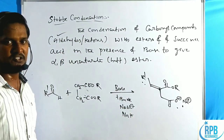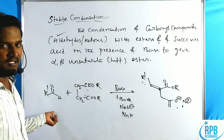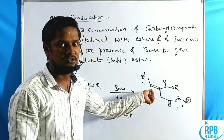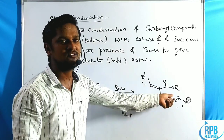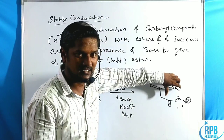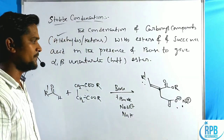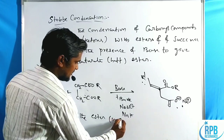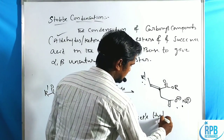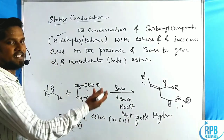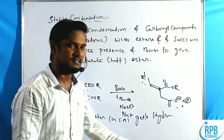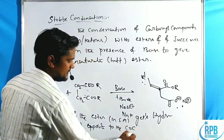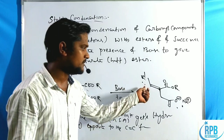This is the simplest representation of Stobbe condensation: aldehydes or ketones treated with esters of succinic acid in the presence of base give an alpha-beta unsaturated carbonyl compound at the alpha-beta position — that is, an alpha-beta unsaturated half-ester. Only one ester is retained; the other gets hydrolyzed. The ester opposite to the C=C formation group gets hydrolyzed.